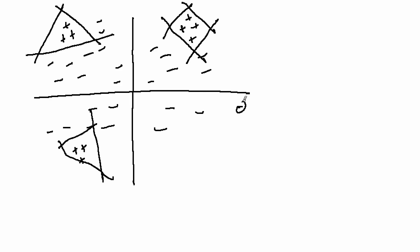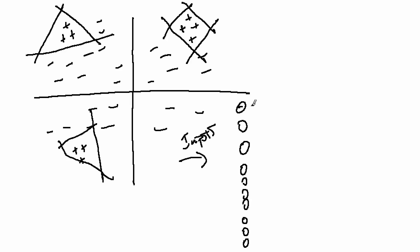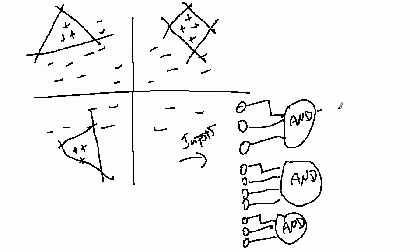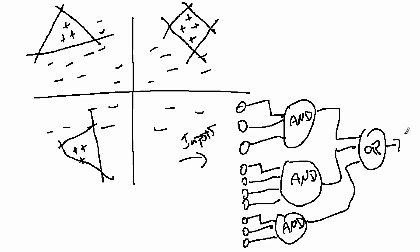So the architecture would look like this: there are three neural networks for the first region, four for the second, and three for the third — all receiving the same inputs. These three go into an AND, those four go into an AND, and those three go into an AND. Then all three of those AND outputs feed into an OR, and that gives us our final output.